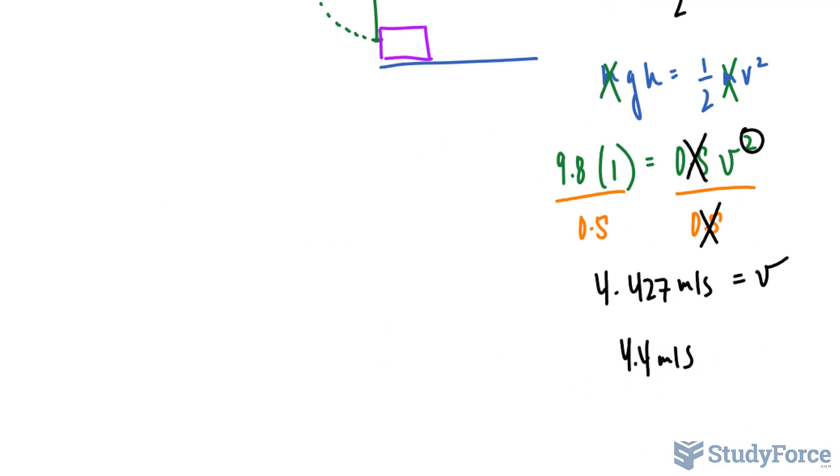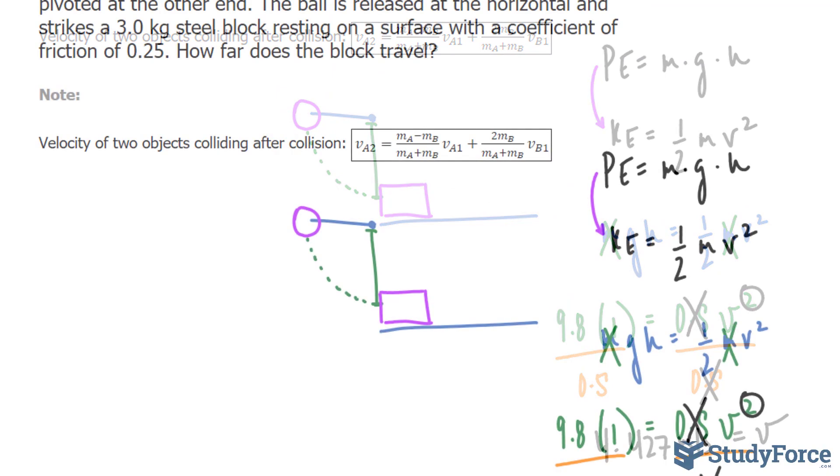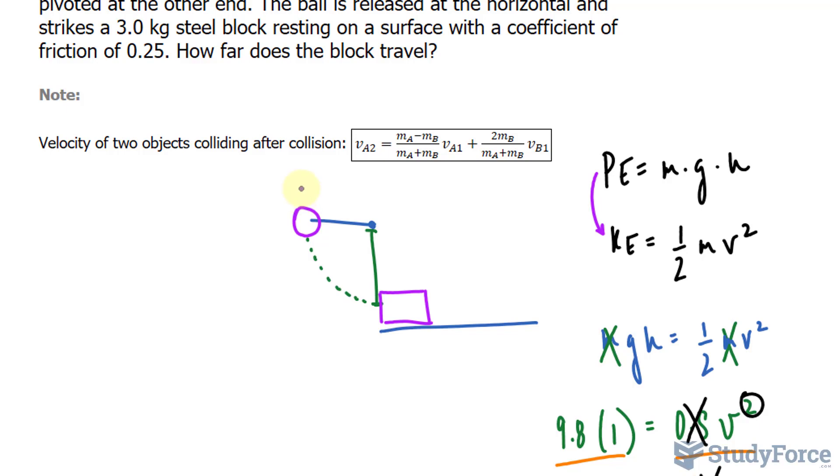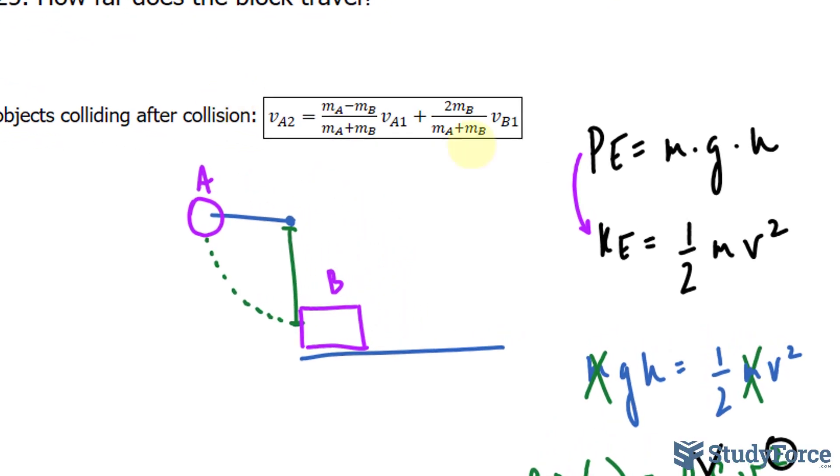Now that we know the velocity of this steel ball, that actually represents the speed of the steel ball before the collision. So just for reference sake, let's call this A and B, so that it corresponds to the formula that's been provided here. In addition, whenever you see a subscript of 1 in the formula, that means before the collision, and a subscript of 2 means after the collision.